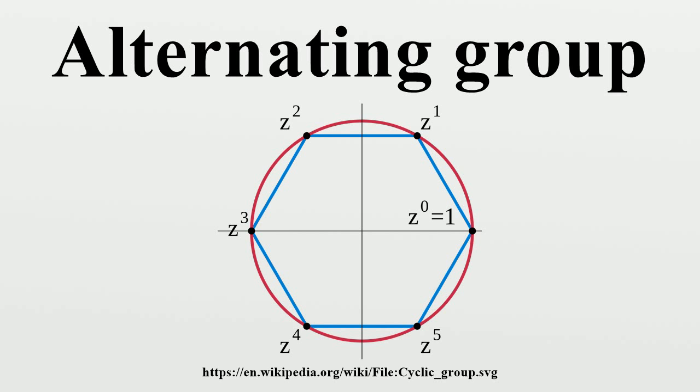The group An is abelian if and only if n ≤ 3 and simple if and only if n equals 3 or n ≥ 5.